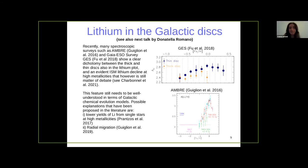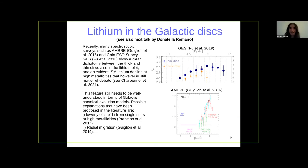Thank you for the comments. Indeed, the models predict a rise and don't see a decline at high metallicity. But since the data at the time showed that decline, we tried to propose a novel explanation related to novae production. But I think it's really due to depletion of lithium inside the stars being observed, and not to depletion in the ISM.